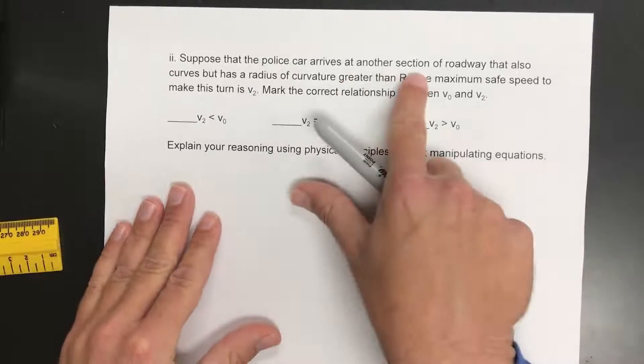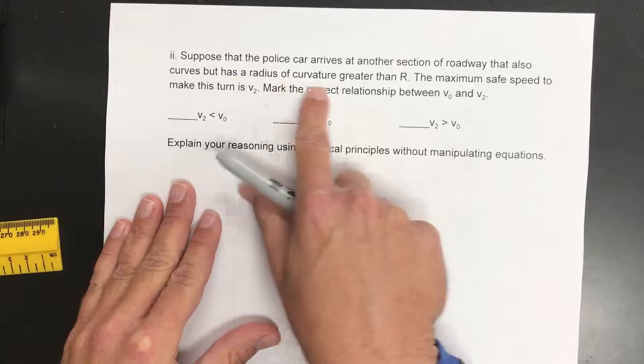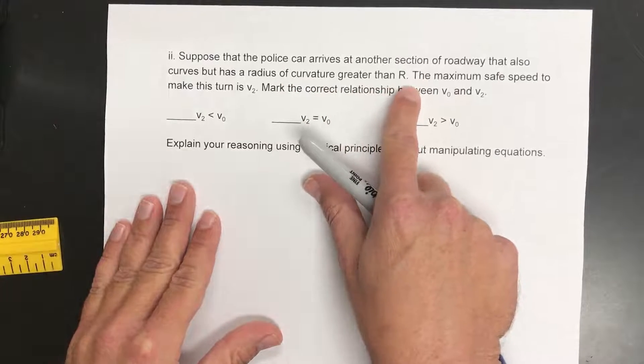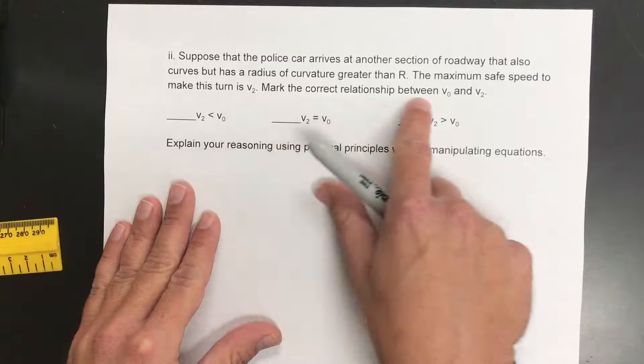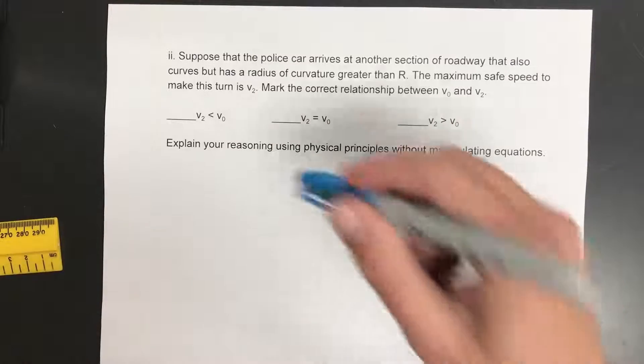Suppose that a police car arrives at another section of the roadway that also curves but has a radius of curvature greater than r. The maximum safe speed to make this turn is v sub 2. Mark the correct relationship between v0 and v2 here.